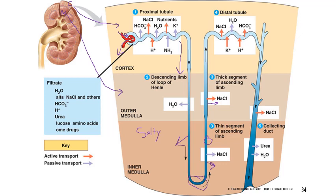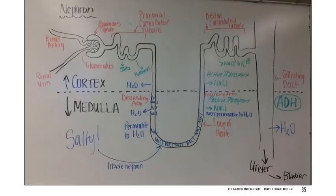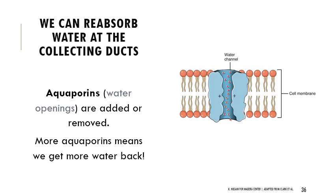The collecting ducts are the last passageway where we can collect water, and then everything else is collected as urine and goes on to the ureter and then to the bladder. Aquaporins — 'aqua' meaning water, 'porin' meaning opening or channel — are water channels that can be inserted into the cell membranes of cells lining the collecting ducts. If you have a signal to reabsorb more water, you pop more aquaporins into those membranes to get more water back.